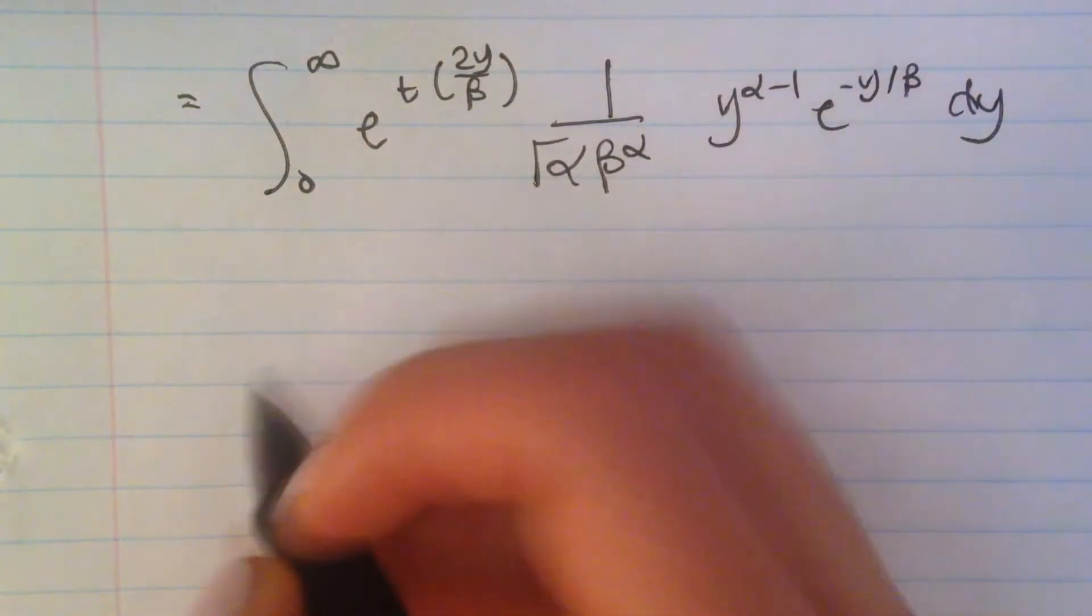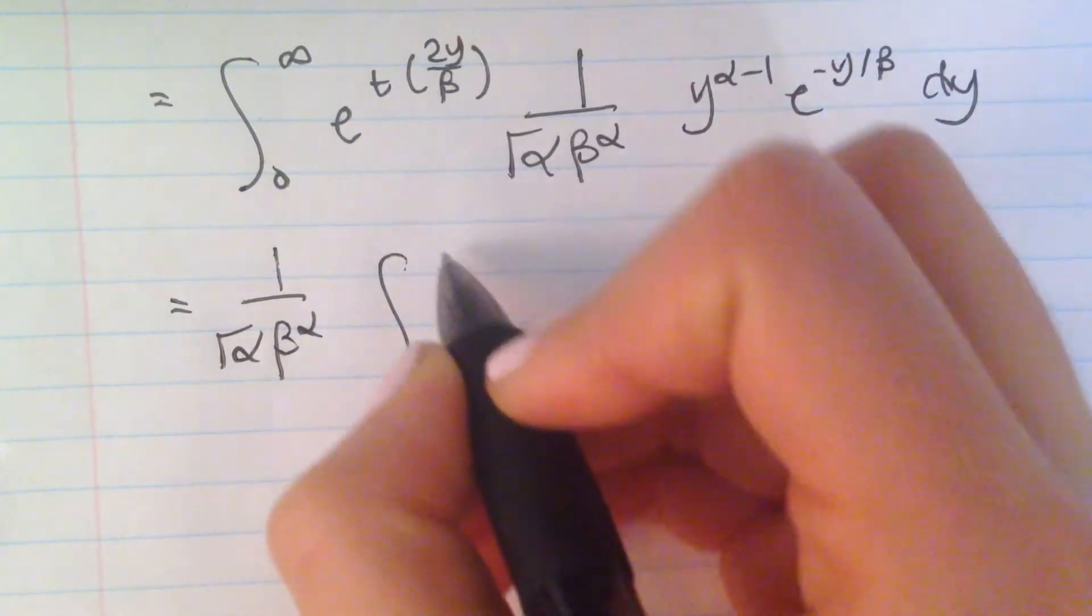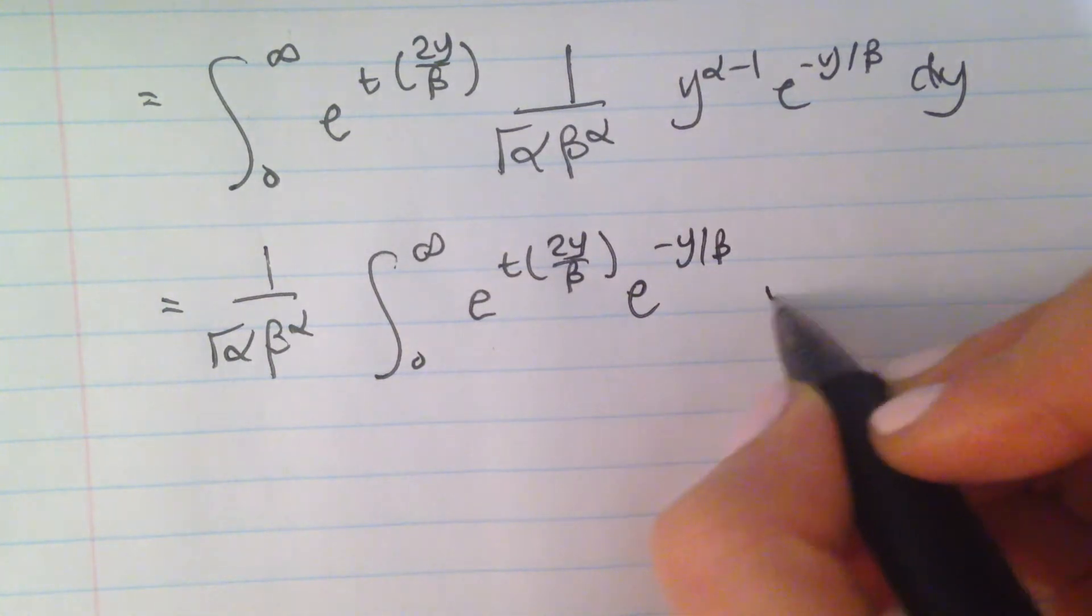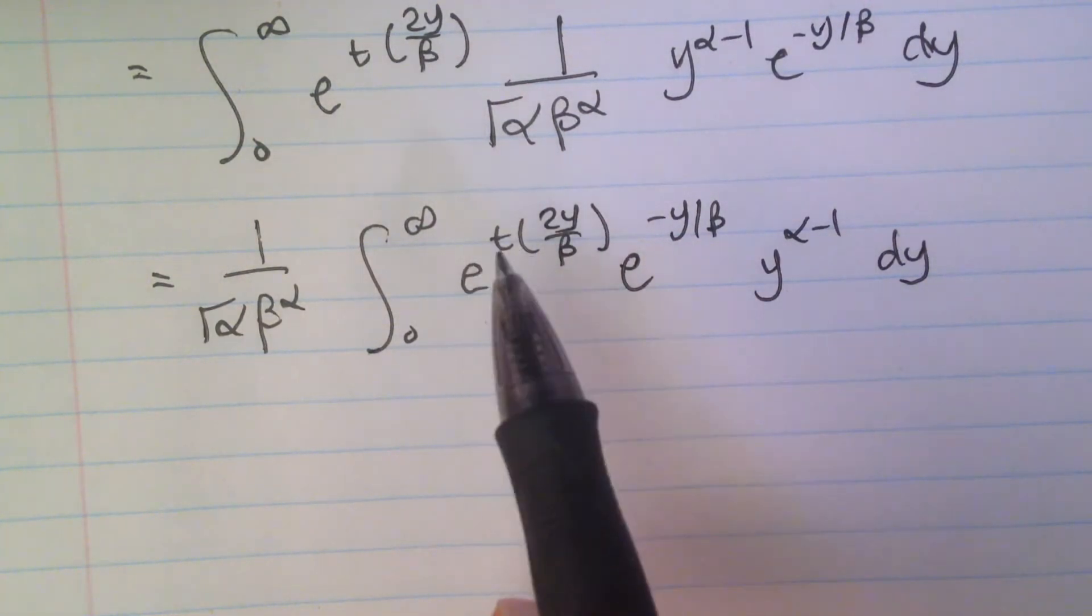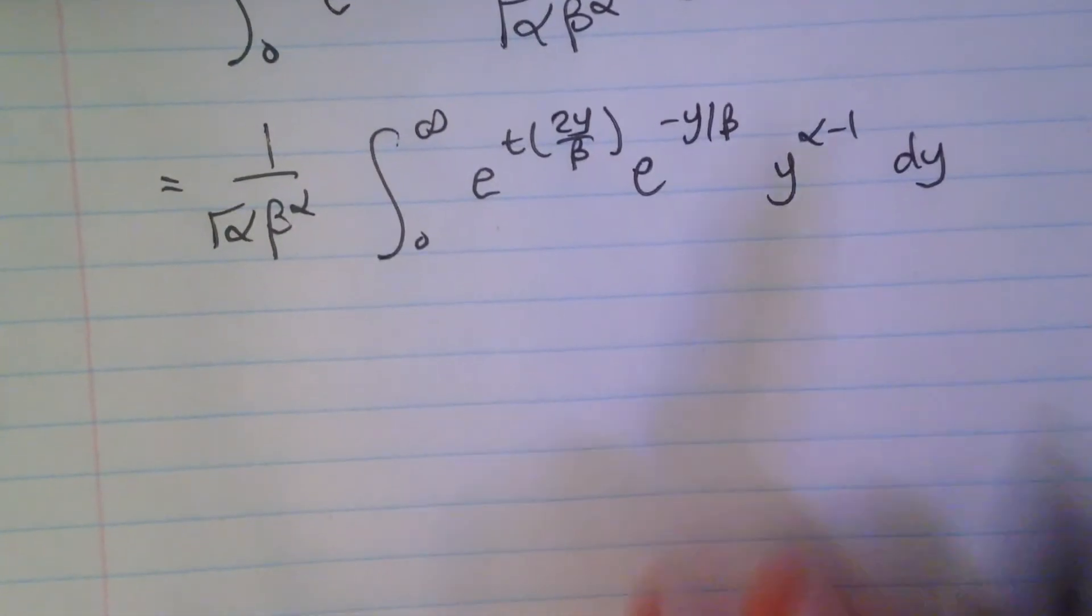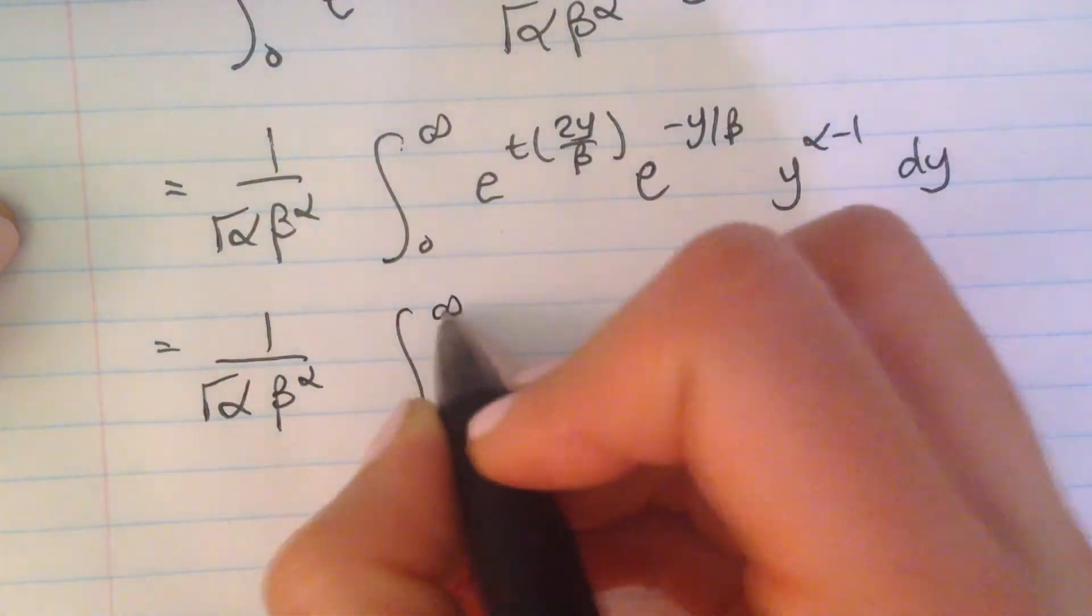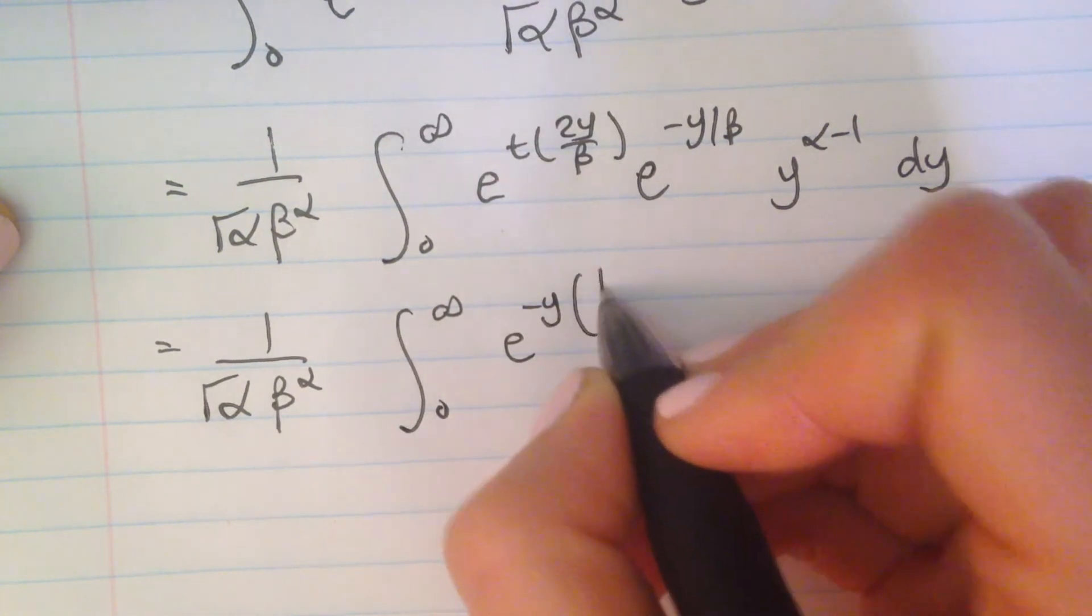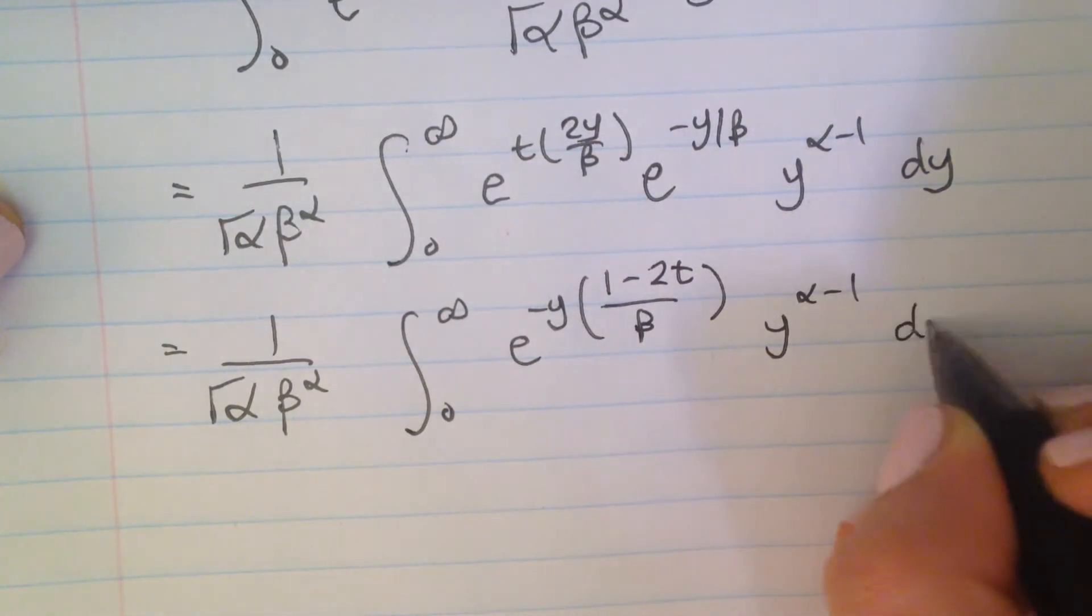So what this is going to become, we're going to take this out of the integral. We know that we can add whatever is in the power here, so we're going to add it. And also, I'm going to leave out of the bracket the minus y, because you're going to see that's going to be the trick to solve the question. So it's going to look a little something like this, and what I'm going to get is 1 minus 2t over beta times y to the alpha minus 1 dy.